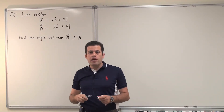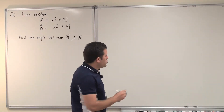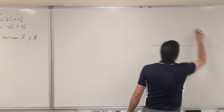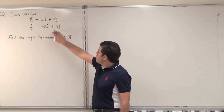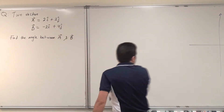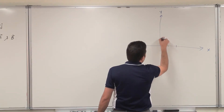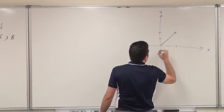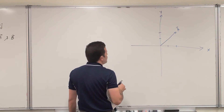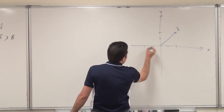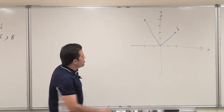In most cases involving an angle between two vectors, we should think first of the dot product, or the scalar product. But before I start, it's better to visualize those two vectors so we can make sense of the answer. So if I produce a rough sketch, this is the x-y plane. Vector A is 2i hat plus 2j hat — two units in x, two units in y. And vector B is minus 2i hat plus 4j hat.